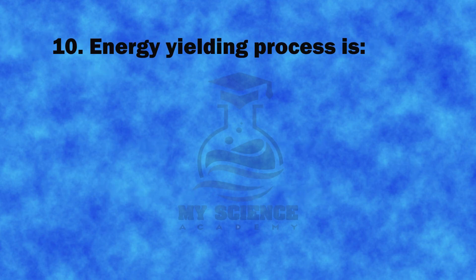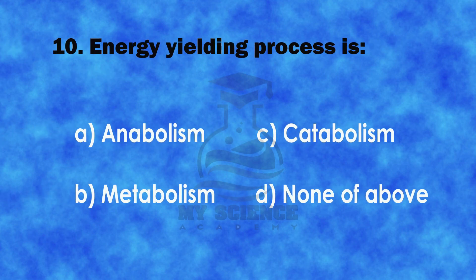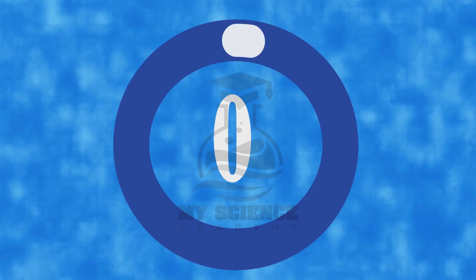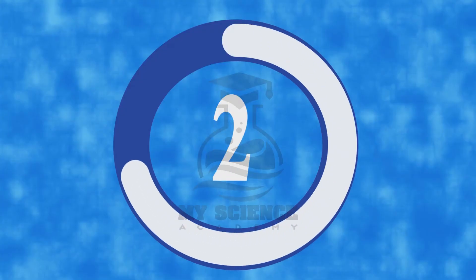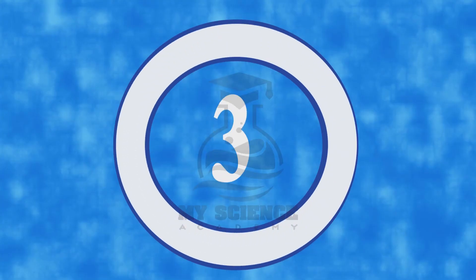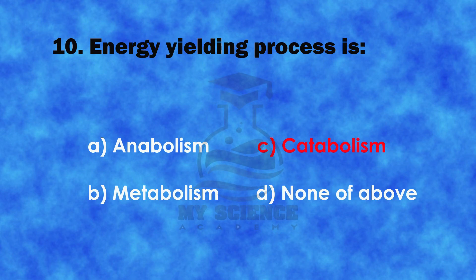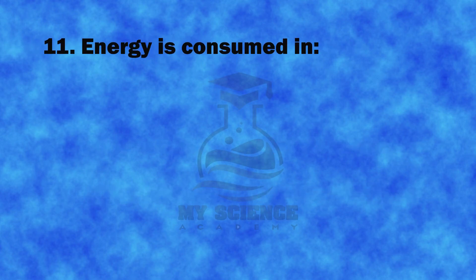Question 10: Energy yielding process is: A. Anabolism, B. Metabolism, C. Catabolism, or D. None of above. The correct answer is C. Catabolism.